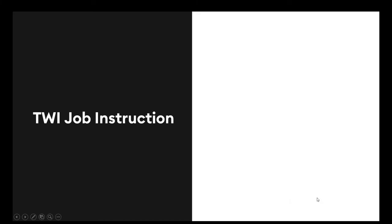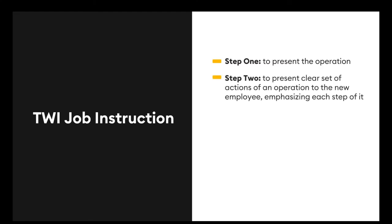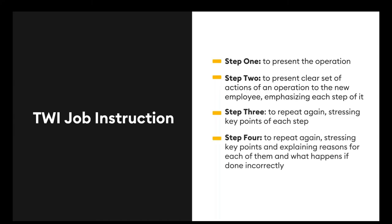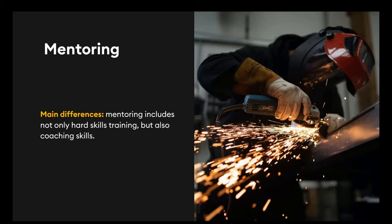TWI — Training Within Industry — is for people working in the field. A professional worker helps a new employee on the job by following four steps: Step one, present the operation to the new employee. Step two, introduce a clear set of actions for the operation, emphasizing each step. Step three, repeat, stressing the key points of each step. Step four, repeat again, stressing key points and explaining the reasons for each, and what happens if they are performed incorrectly. Clients also use guidelines they call a roadmap for step-by-step operation completion, which are uploaded to an LMS and assigned as theoretical content before an operation.